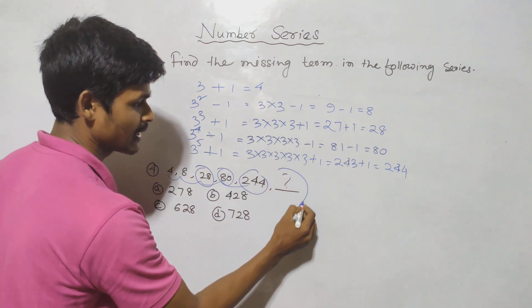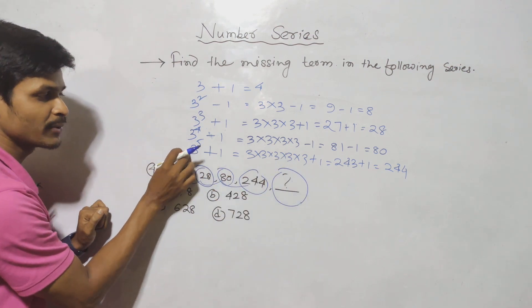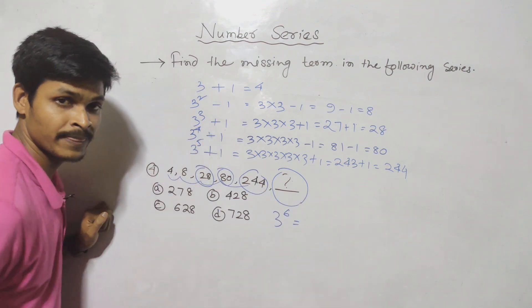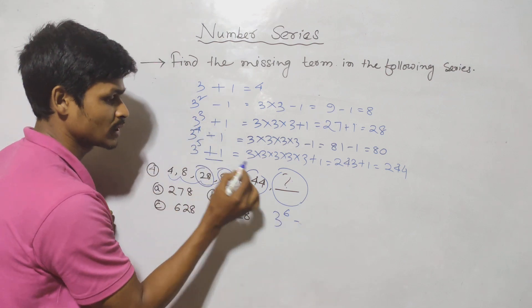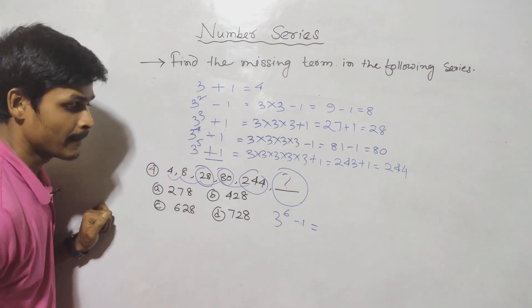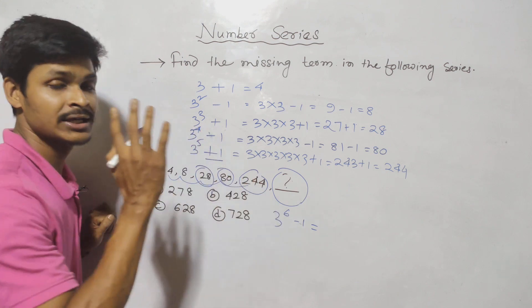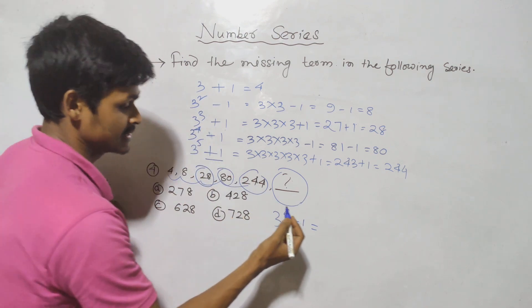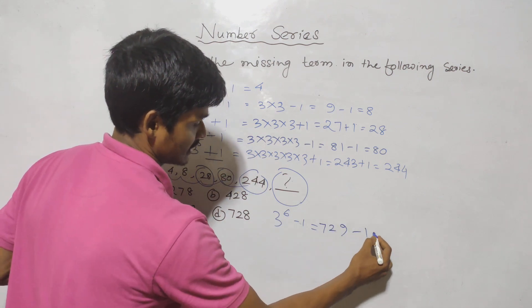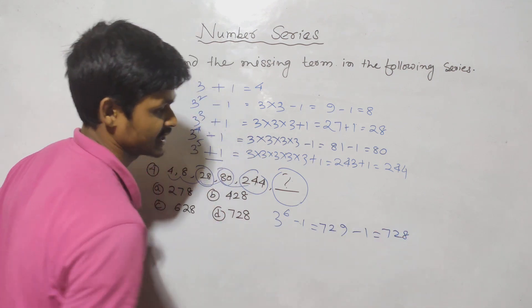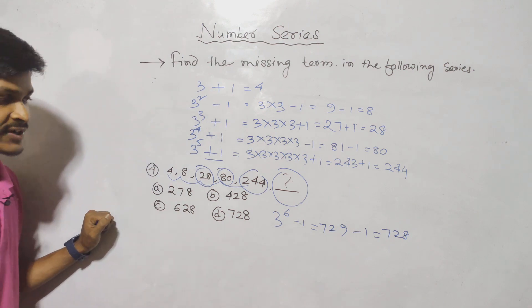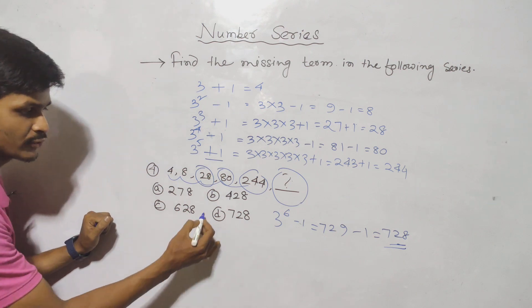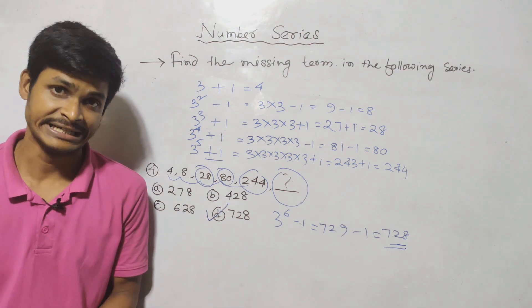Next: 3 to the power 6 minus 1. 3 to the power 6 equals 729. So 729 minus 1 equals 728. The answer is option D: 728.